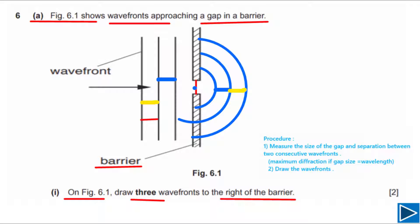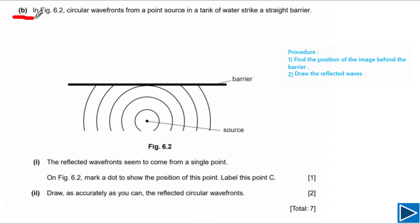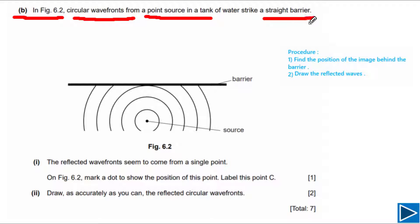We can adjust and clean up the drawing to make it look better. That's how you need to draw for part A. For part B, in figure 6.2, circular wave fronts from a point source in a tank of water strike a straight barrier — this black line is the straight barrier.